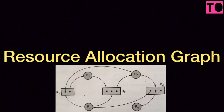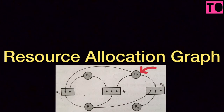Let's look at the resource allocation graph. You can see the resource allocation graph. This box is a resource. In the process, you have a round shape. You have a resource in rectangle shape and a process in round shape.